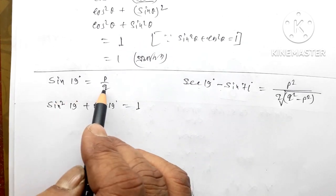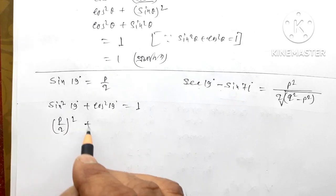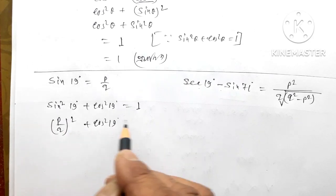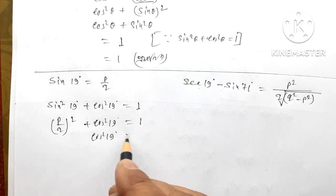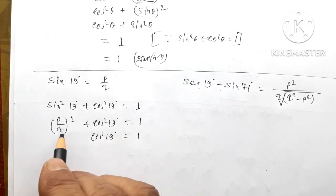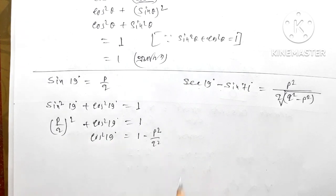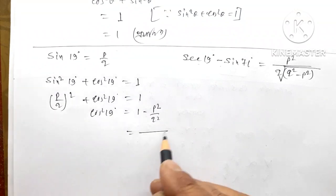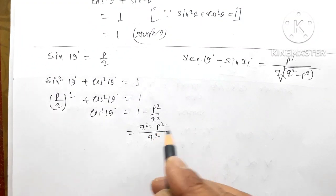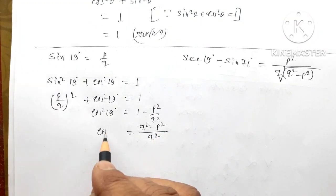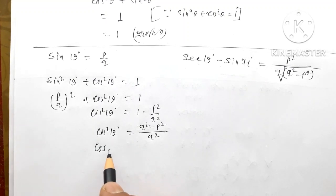Sin 19 degrees value to be p by q. It is whole square plus cos square. Cos square 19 degrees is 1 minus p square by q square. It is equal to q square minus p square by q square. It is equal to cos square 19 degrees. It is equal to cos 19 degrees.